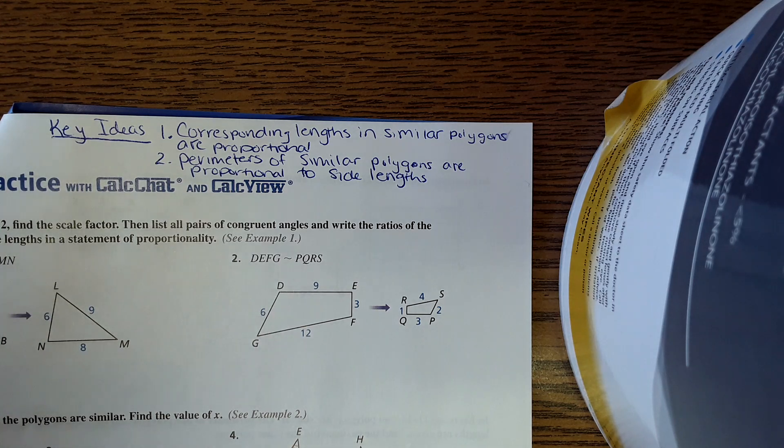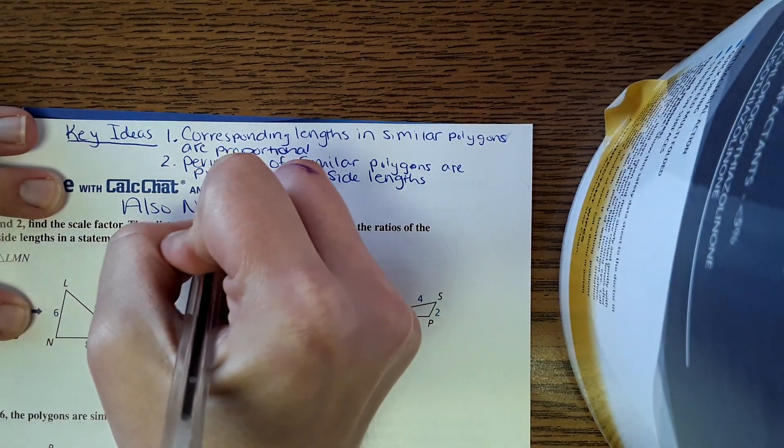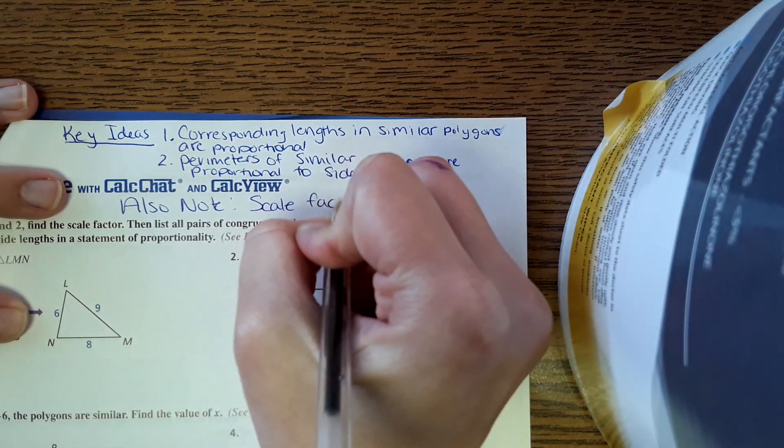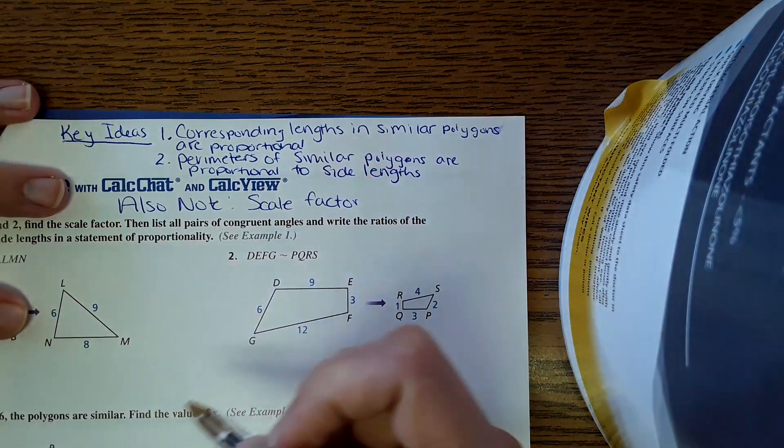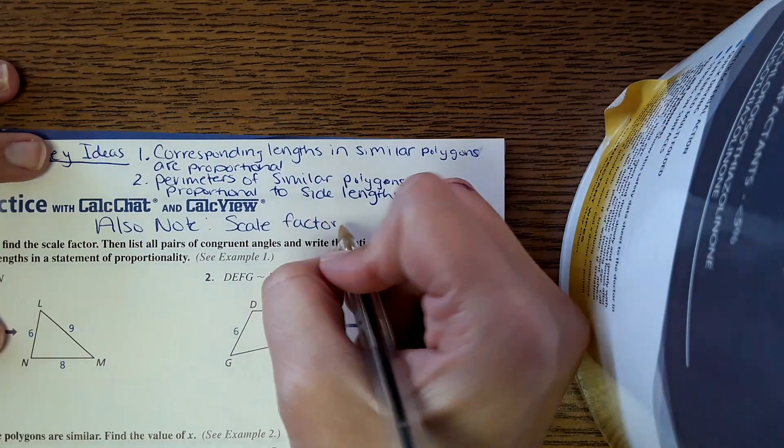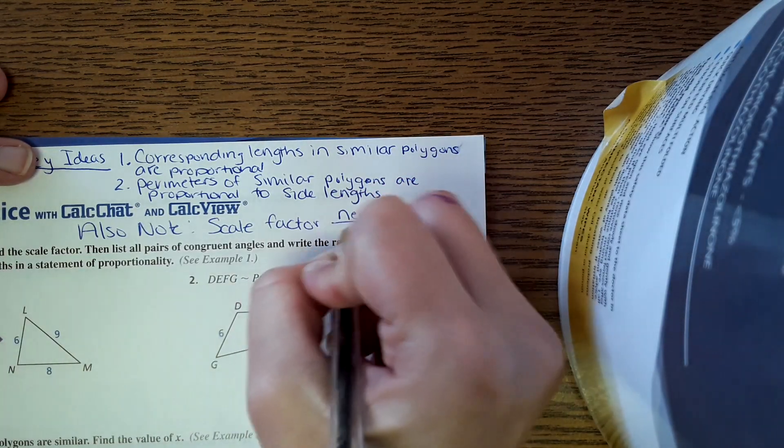Another thing is just review. We're going to be looking at scale factor. Scale factor is a factor in which the shape is enlarged by. Specifically, we have to remember that for scale factor it's the new shape over the original.